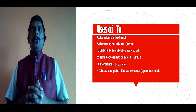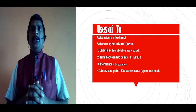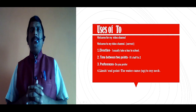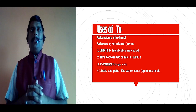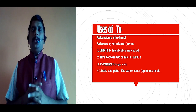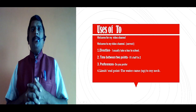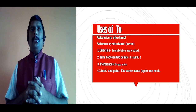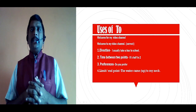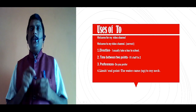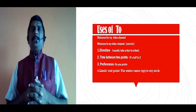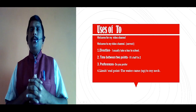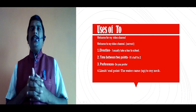Uses of 'to': First, 'to' is used for direction — for example, I usually take a bus to school. Second, 'to' is used for time between two points — for example, it's half to two. Third, 'to' is used for preferences — for example, do you prefer to walk or to take a bus? Fourth, 'to' is used for a limit or end point — for example, the water came up to my neck.